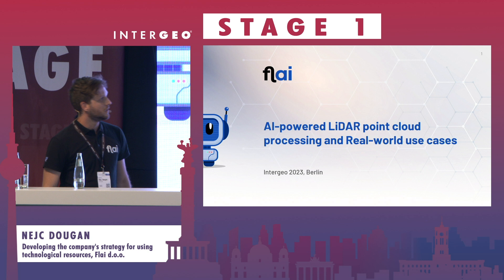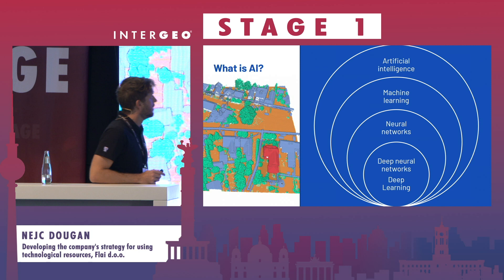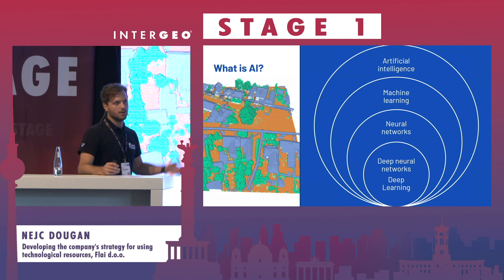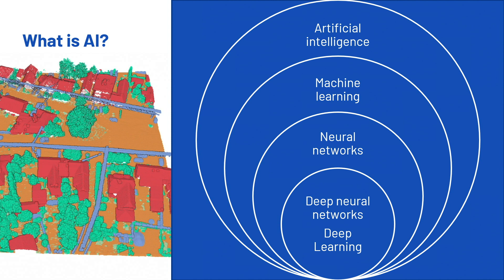So what even is AI? This year everybody heard the term AI all over the place, from ChatGPT to other language models. But in fact, artificial intelligence is just a field that deals with the development of intelligent systems. The most used technology is machine learning, which requires quite massive annotated datasets to train our algorithms to get to the end results.